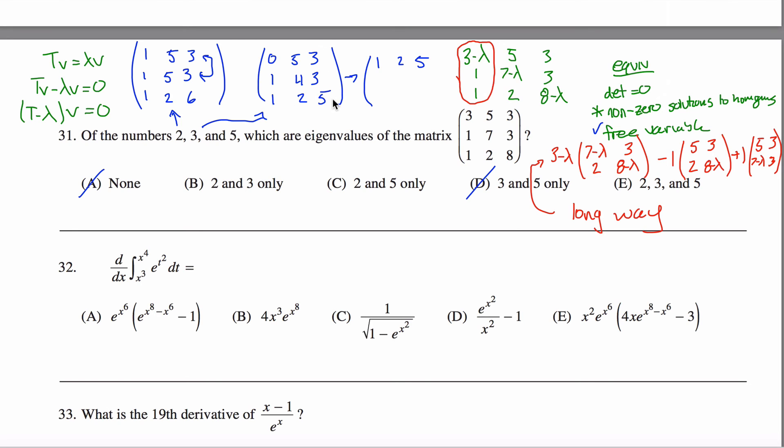And then instead of the 1, 4, 3, I'll do 1, 4, 3 minus the 1, 2, 5. So that'll give me a 0 here and a 2 here and a negative 2 here. And then I got this 0, 5, 3 here.